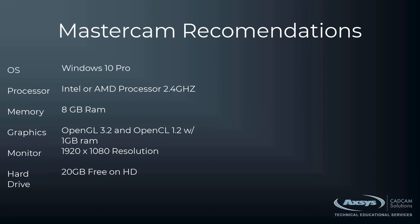Welcome to the AXS hardware recommendations for Mastercam 2022. This first recommendation is from Mastercam's website: Windows 10 Pro, Intel or AMD processor at 2.4 GHz — they don't specify generation — 8 GB of RAM, OpenGL 3.2 and OpenCL support with 1 GB of VRAM, a 1920x1080 monitor, and 20 GB free on the hard drive. To be fair, this is their minimum hardware recommendation. At AXS, we don't recommend this configuration at all — you would be highly disappointed with Mastercam's performance on a box with this configuration.